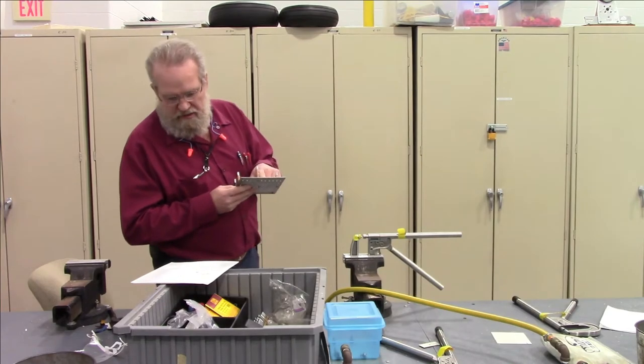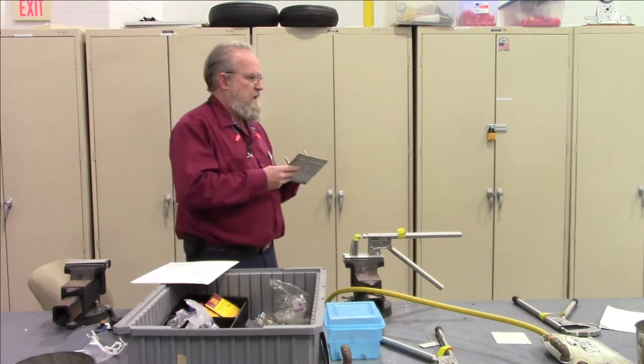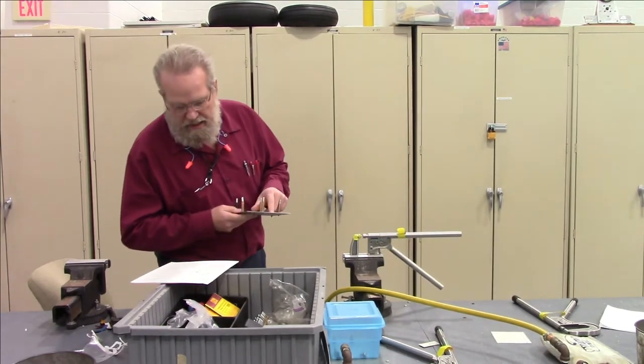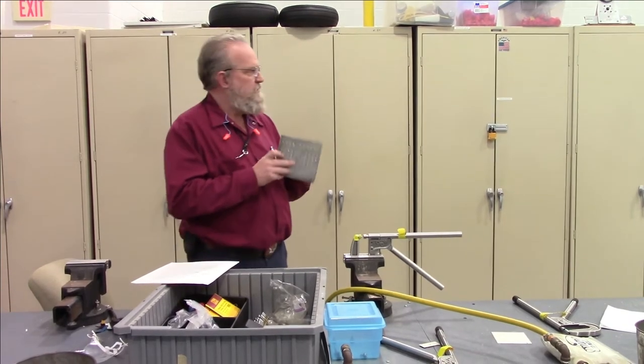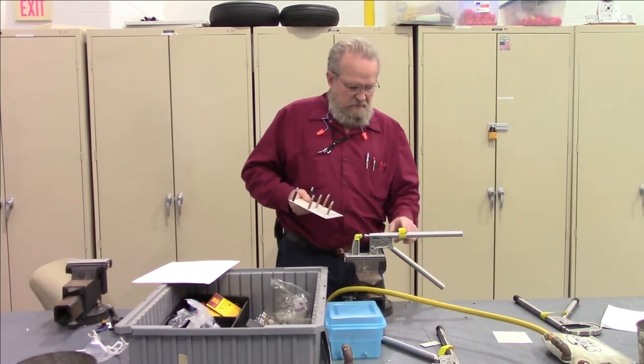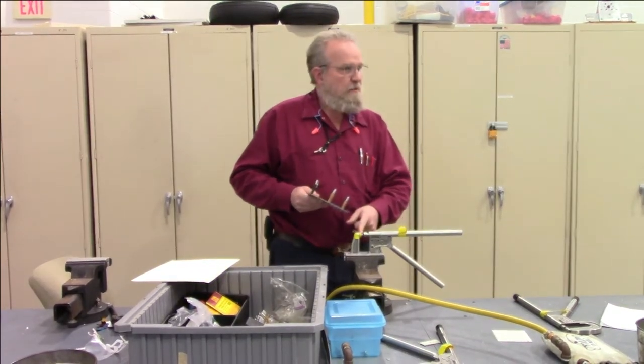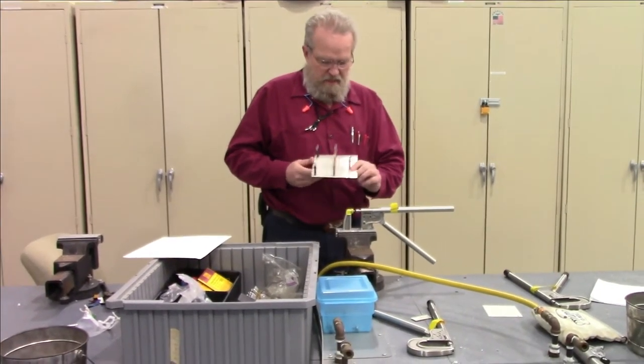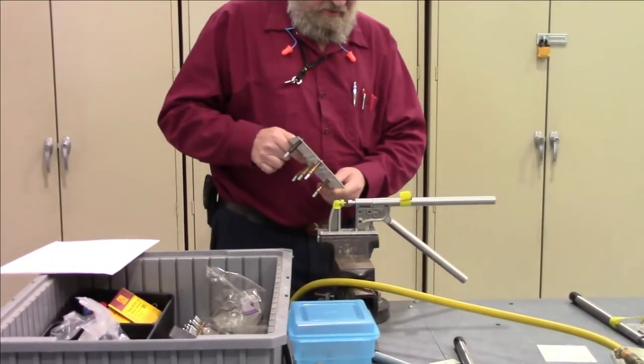And I'm going to rivet the AN426AD4 rivets here. So, the first thing you have to do, there is a, you've got to make sure it's the right size dimple die on here. And I've got it set up so it's very simple, all right?